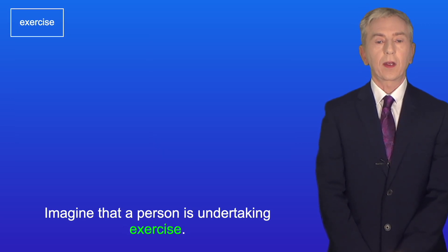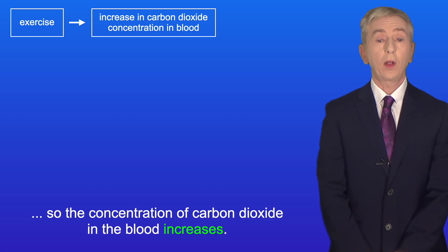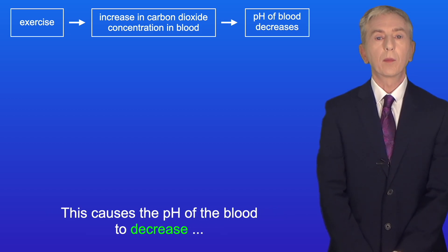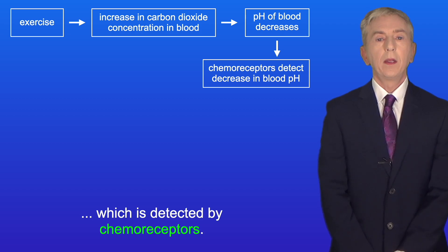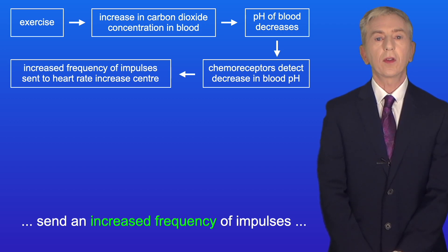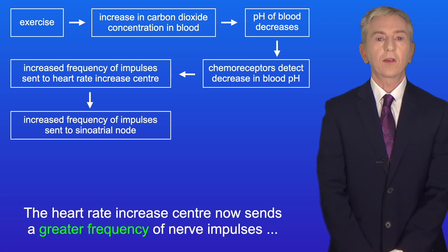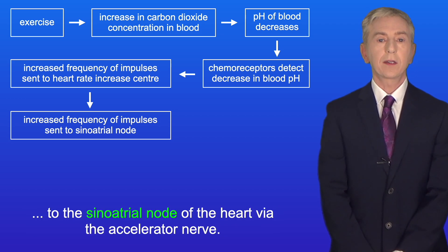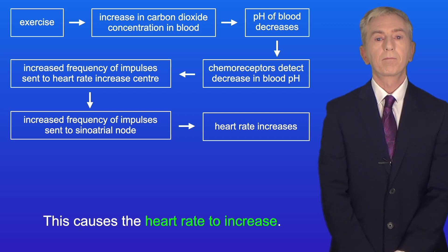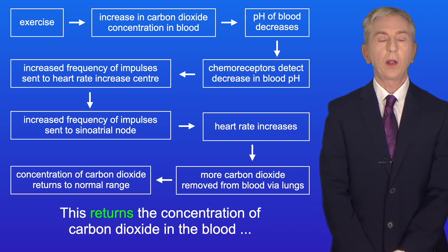Imagine that a person is undertaking exercise. Aerobic respiration produces carbon dioxide, so the concentration of carbon dioxide in the blood increases. This causes the pH of the blood to decrease, which is detected by chemoreceptors. The chemoreceptors in the aorta and carotid arteries send an increased frequency of impulses to the heart rate increase center in the medulla oblongata. The heart rate increase center sends a greater frequency of nerve impulses to the sinoatrial node via the accelerator nerve, causing the heart rate to increase. The increased rate of blood flow causes more carbon dioxide to leave the blood in the lungs, returning the concentration of carbon dioxide back to the normal range.